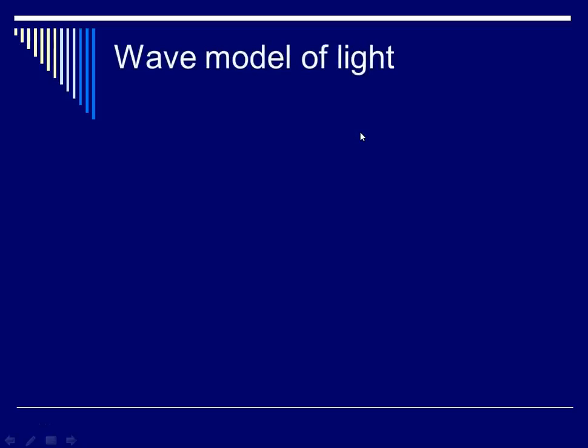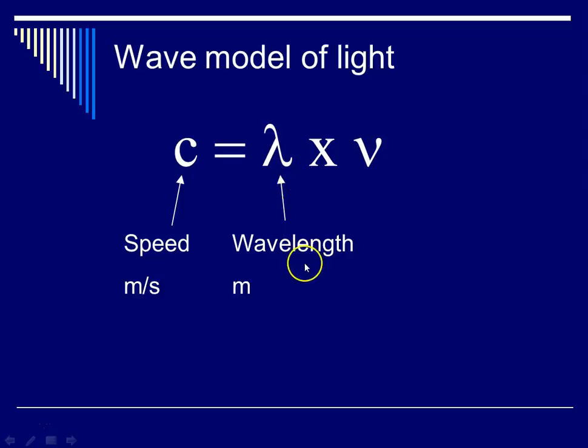So recall that with the wave model of light, we said that C, the speed of light, or the speed of electromagnetic radiation, is equal to the wavelength, represented by Greek letter lambda, times Greek letter nu, the frequency.